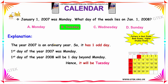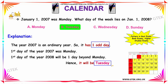Let us see the answer. The year 2007 is an ordinary year. As you know, 2007 is an ordinary year, hence it will have one odd day. The 1st day of the year 2007 was Monday. So, the 1st day of the year 2008 would be 1 day beyond Monday — that is Tuesday. Hence, our answer is Option B, Tuesday.